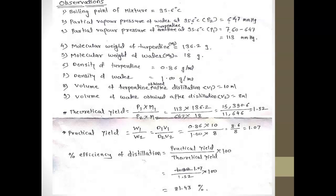The partial vapor pressure of turpentine at 95.6°C, denoted as P1, is 113 mmHg. The molecular weight of turpentine, M1, is 136.2 g/mol, and the molecular weight of water, M2, is 18 g/mol. The density of turpentine, d1, is 0.86 g/ml, and the density of water, d2, is 1 g/ml.